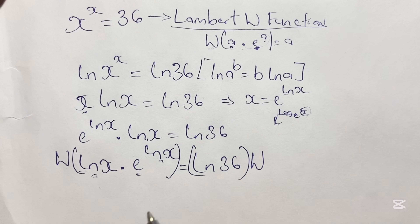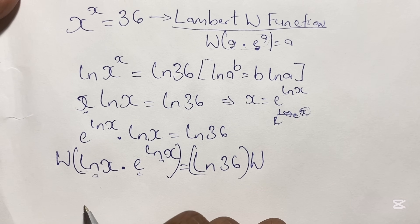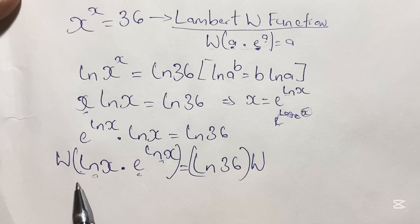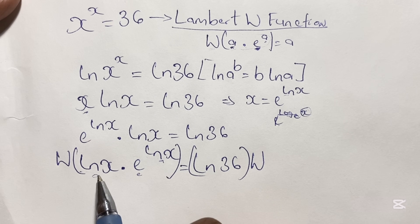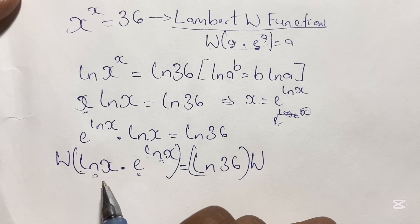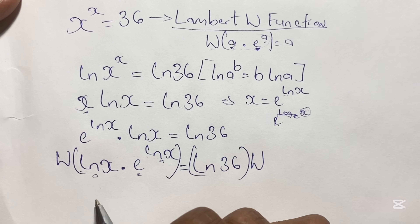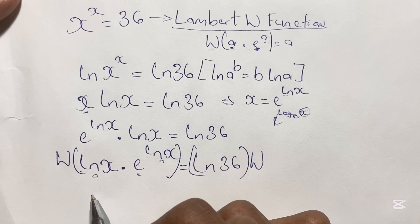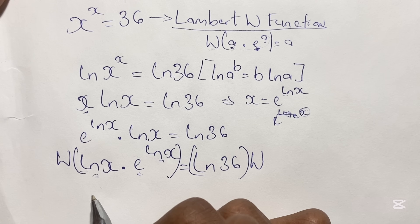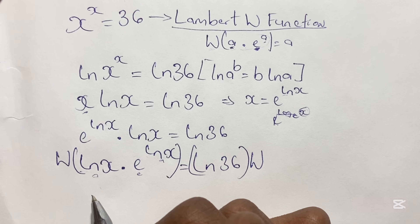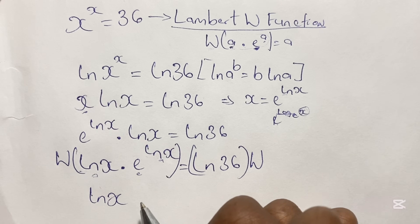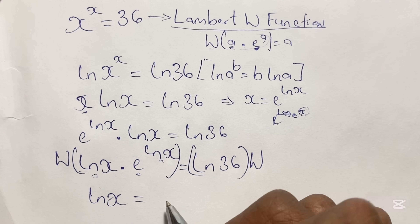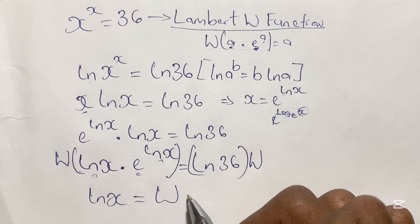Rewriting the equation clearly: applying the W function to a times e to the power of a gives us just a. In this case, a is ln x. So this means we have ln x equals W(ln 36).